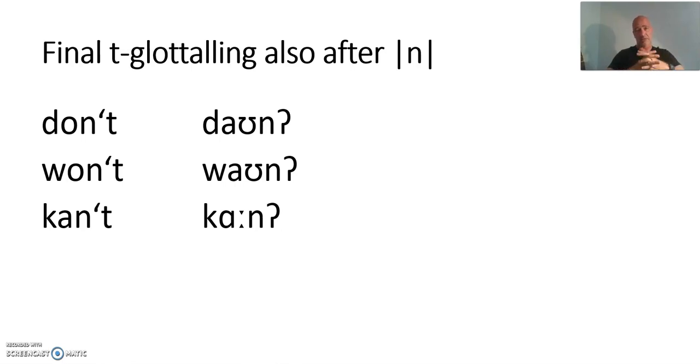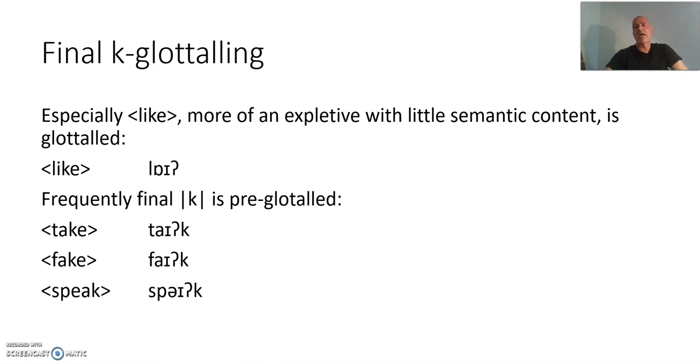Final glottaling after N occurs as well. Don't. Won't. Can't. Things like that. Yes, it does. A final K-glottaling, yes, it does occur. Particularly in this word, like, which is more or less an expletive these days. It's like, like I said before. Like. Like I said. It's like that, you see? It's such a frequent word. And it's glottaled on a regular basis. The other kind of K-glottaling is usually pre-glottaling. And we have that too. You have the glottal stop and then have the plosive all the same. Take. Fake. Speak. And even a very strong aspiration. Speak. Particularly when you're emphatic. This occurs quite a lot.